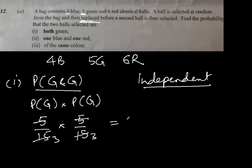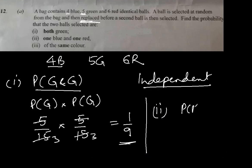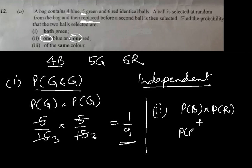Second part: one is blue and one is red. Notice they have highlighted 'one and one' — it means they are not specifying that the first one is blue or the first one is red. One is blue and one is red means they can change their places; it can be first one is red and second one is blue — that's also possible.